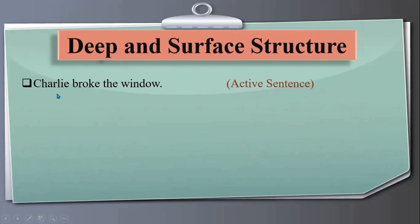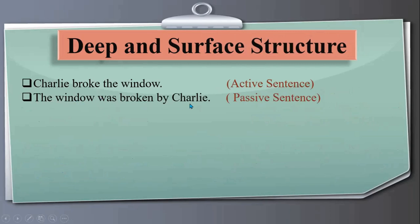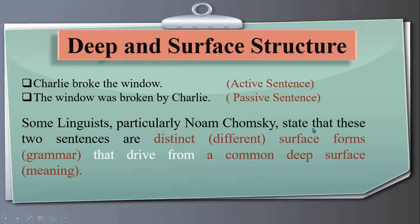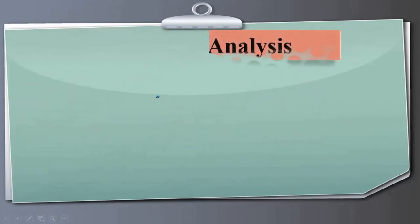For example, 'Charlie broke the window' is an active sentence, and 'The window was broken by Charlie' is a passive sentence. Both sentences have the same meaning. Some linguists, particularly Noam Chomsky, state that these two sentences are distinct surface forms — different grammatical structures — that derive from a common deep structure meaning. Surface structure refers to grammar; deep structure refers to meaning.